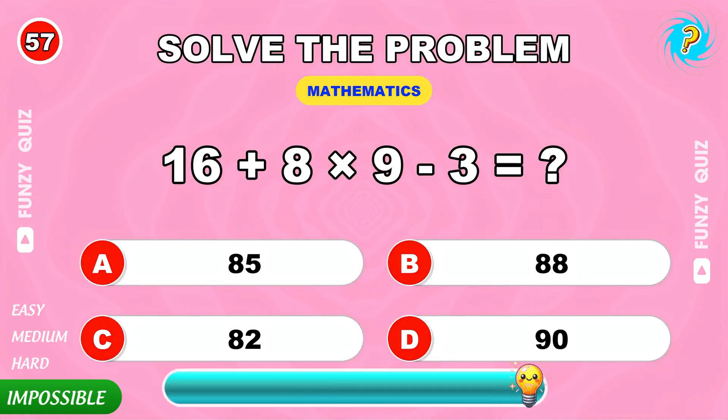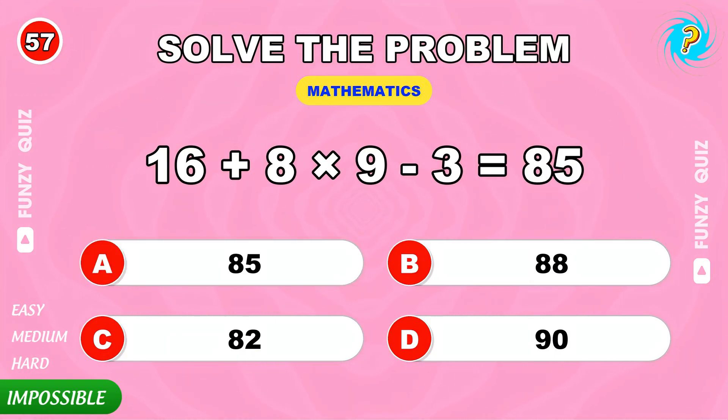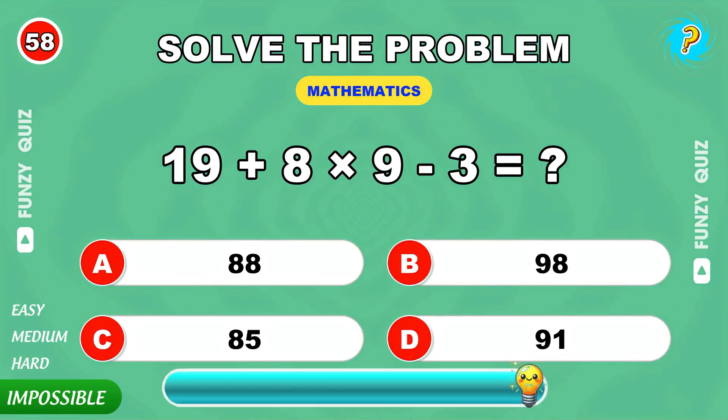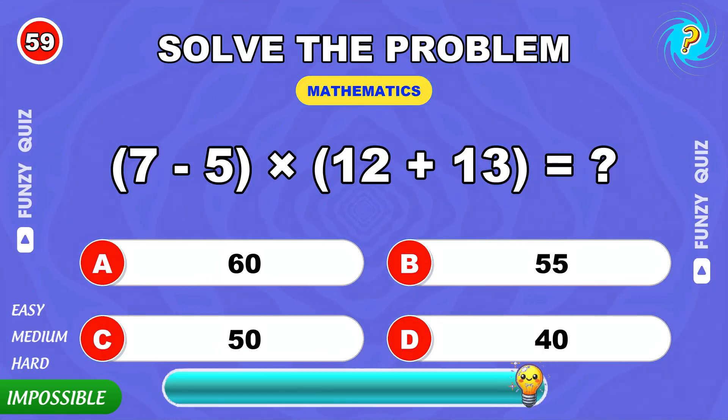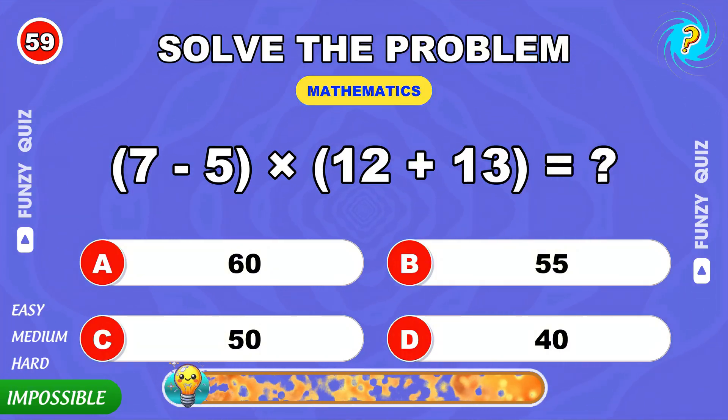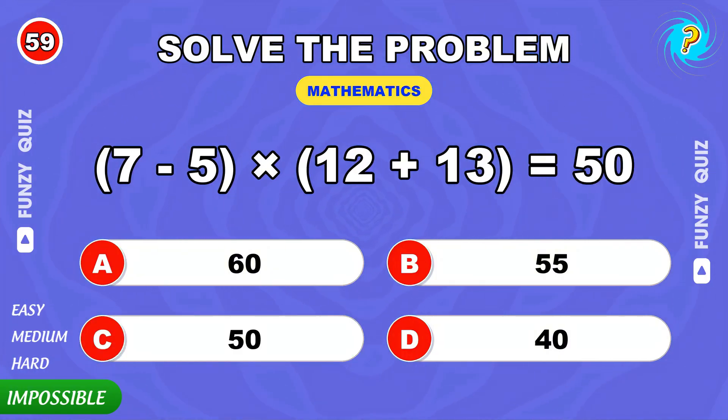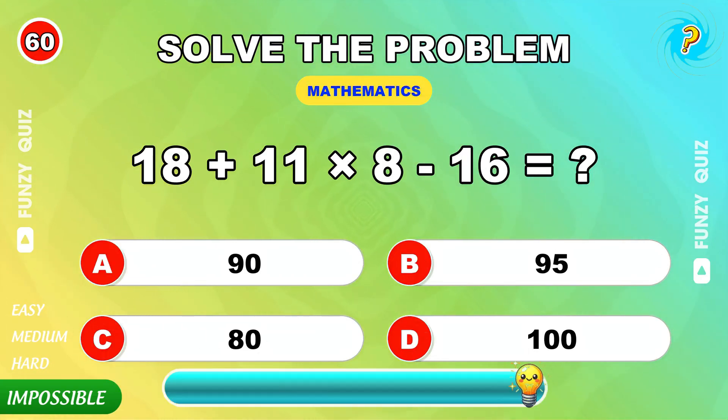16 plus 8 times 9 minus 3. 85. 19 plus 8 times 9 minus 3. 88. 7 minus 5 times 12 plus 13. 50. Final challenge: 18 plus 11 times 8 minus 16. 90.